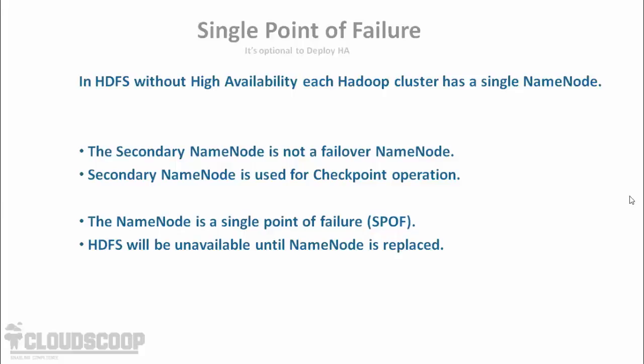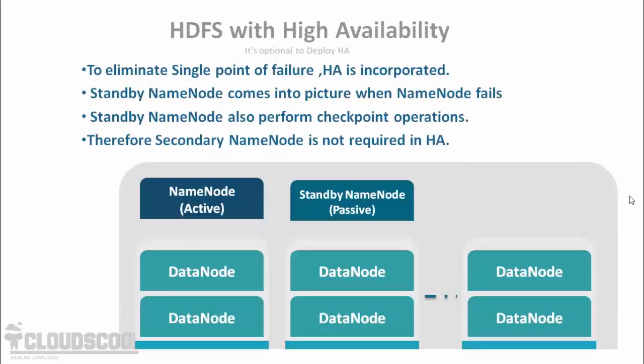With Hadoop 2.x, to eliminate the single point of failure, HA is incorporated. In HA, as you can see, there is a service known as the standby name node, which performs the checkpoint operation. This node comes into picture as soon as the name node fails — it takes over from the failed name node. Therefore, it is also called the failover node.